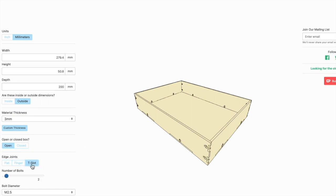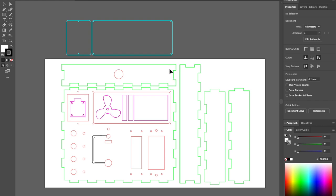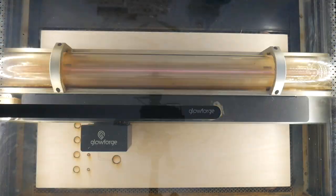First I used this online tool called MakerCase to design all the box pieces. Next, I brought those pieces into Illustrator and added all of the cutouts for the buttons and switches, and then I cut it out on my laser cutter.